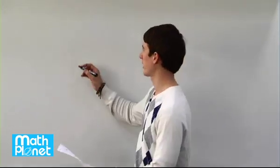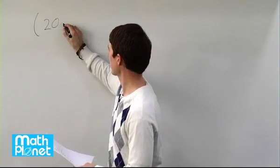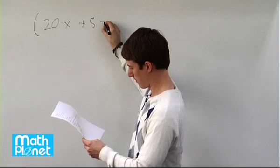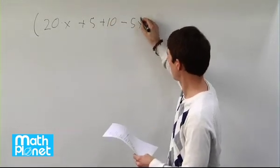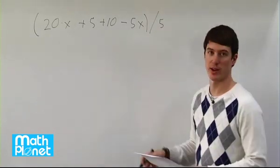Here we want to simplify an algebraic expression written as 20 times x plus 5 plus 10 minus 5 times x, and that's all divided by 5. So we want to simplify this.